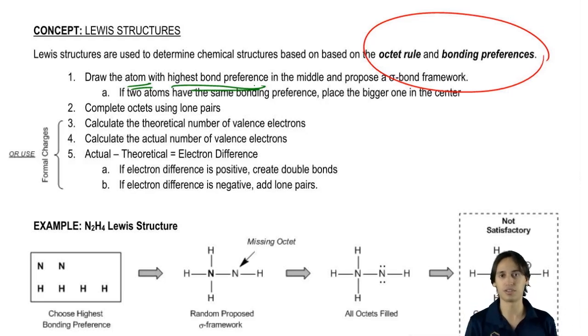Electropositive just means the one that is furthest away from fluorine. So in that case, you would just start off with that one or you could start off with the highest bonding preference, meaning the one that makes the most bonds.